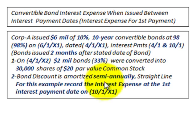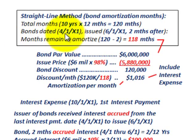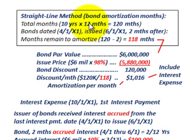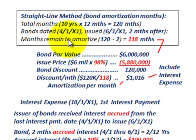We're not concerned about the conversion — we're concerned about the interest expense. The first thing we have to do is use the straight-line method to determine the bond amortization on a monthly basis. The bond amortization of this discount is going to be charged against the interest expense. We look at the total months — there are 10 years, 12 months per year, so 120 months total on this bond. But the bonds are dated on 4-1-X1 and issued on 6-1-X1, which is 2 months after the bond date. So the months remaining to amortize: 120 minus 2 equals 118 months.